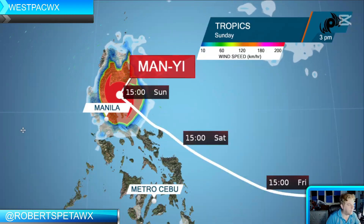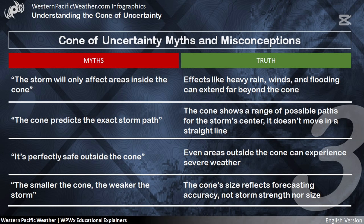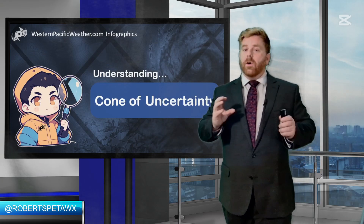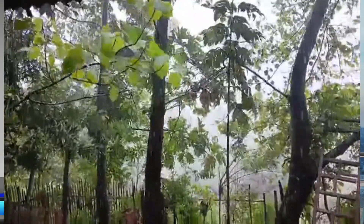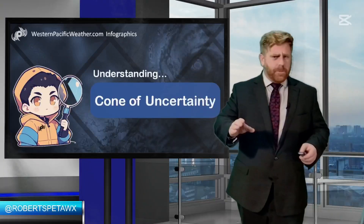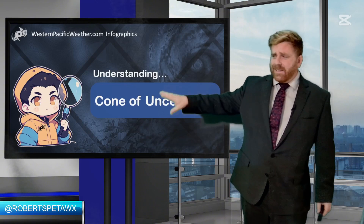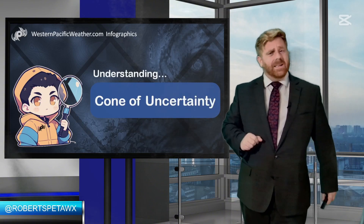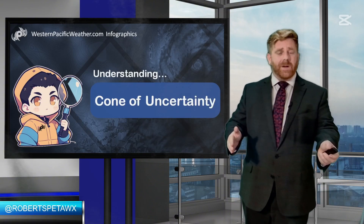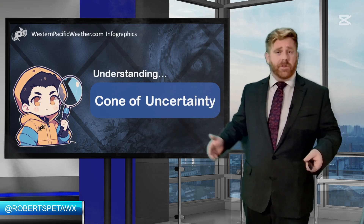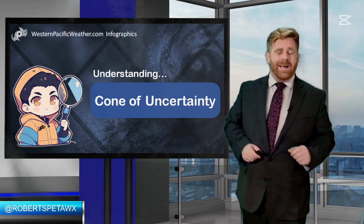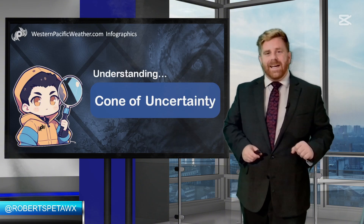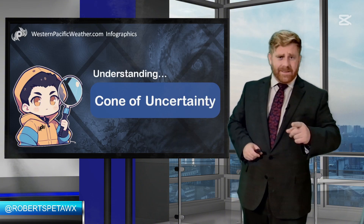And the smaller the cone, the weaker the storm, or the larger the cone, the stronger the storm — the cone has nothing to do with the overall intensity of a tropical cyclone. I hope that helps break down what exactly the cone of uncertainty is. I'm meteorologist Robert Spetta. If you have any questions or would like to see more education videos, please let me know in the comments below, give us a like and subscribe, and stay safe out there.